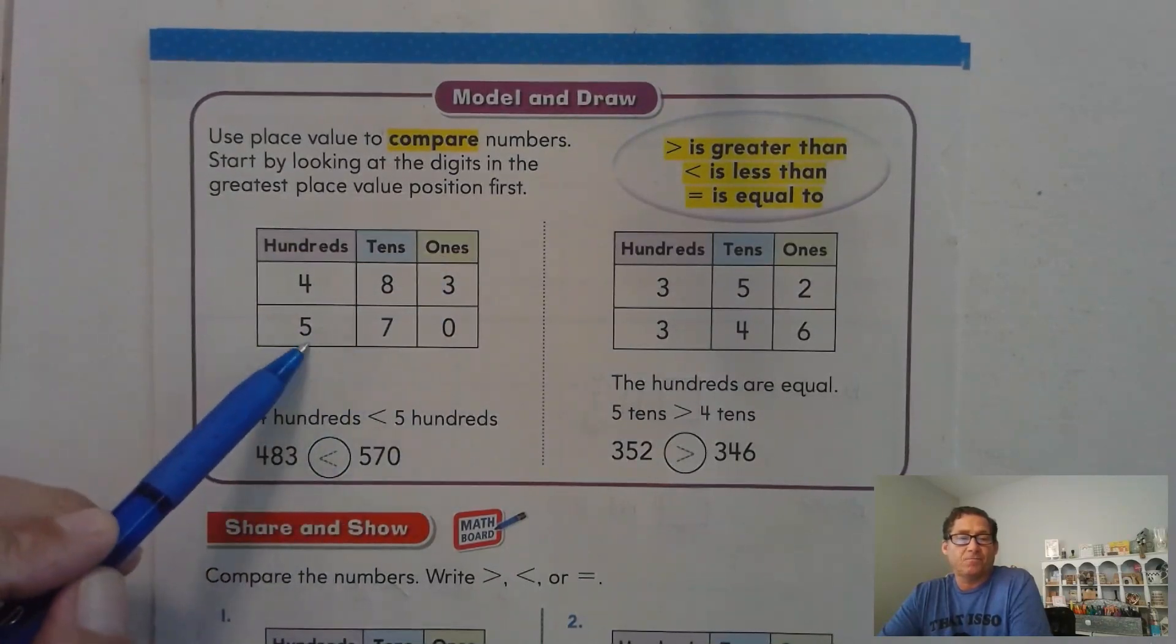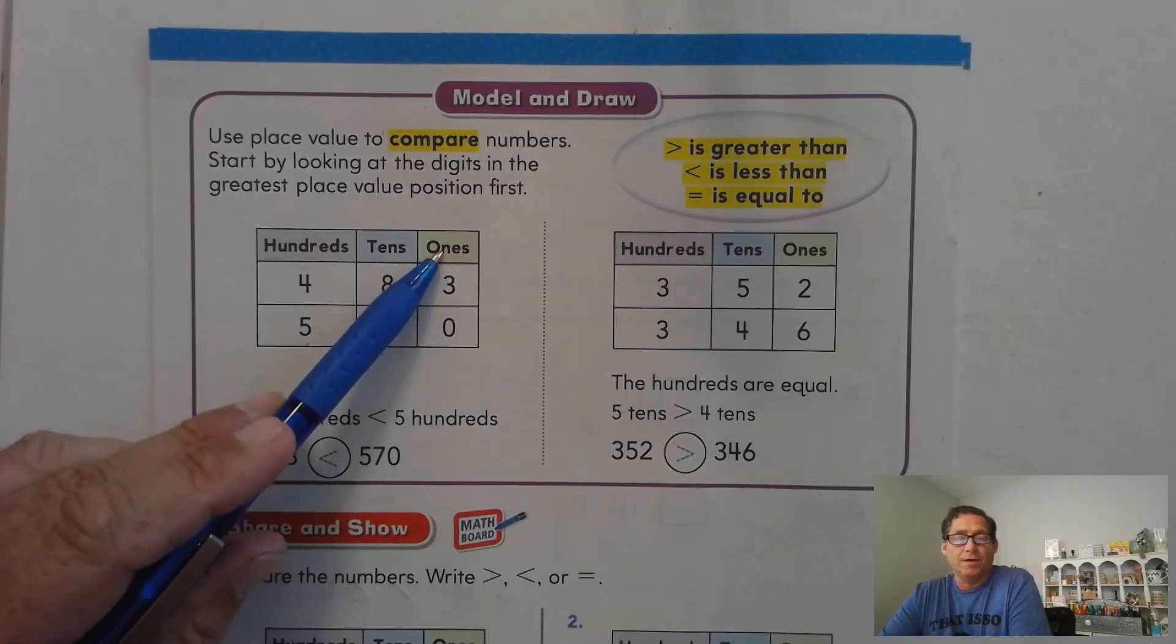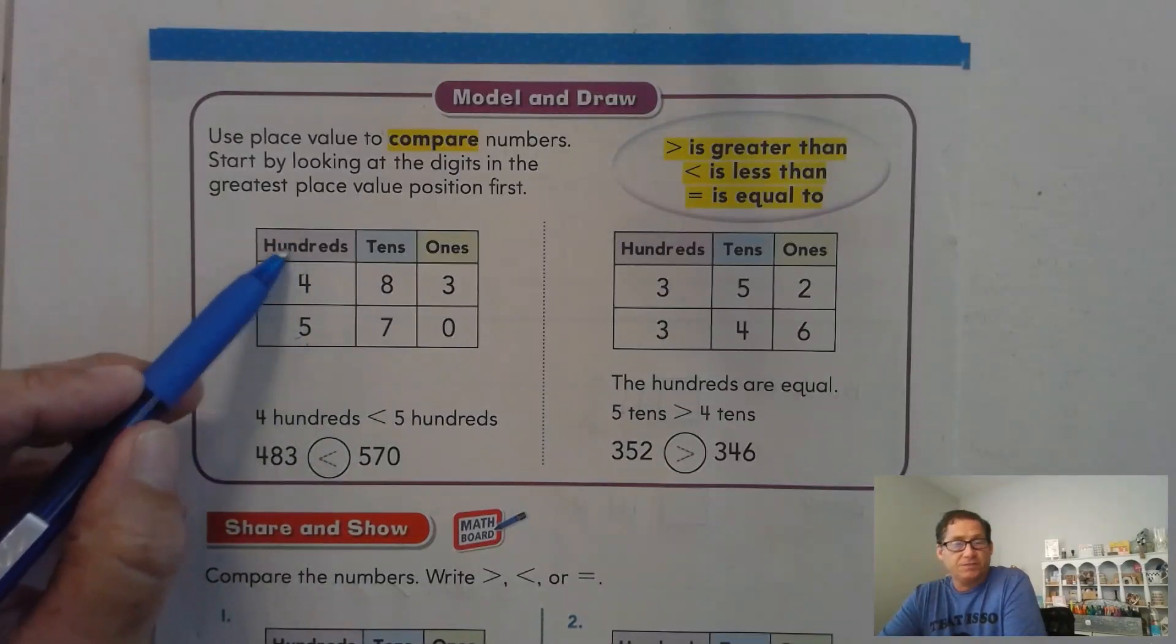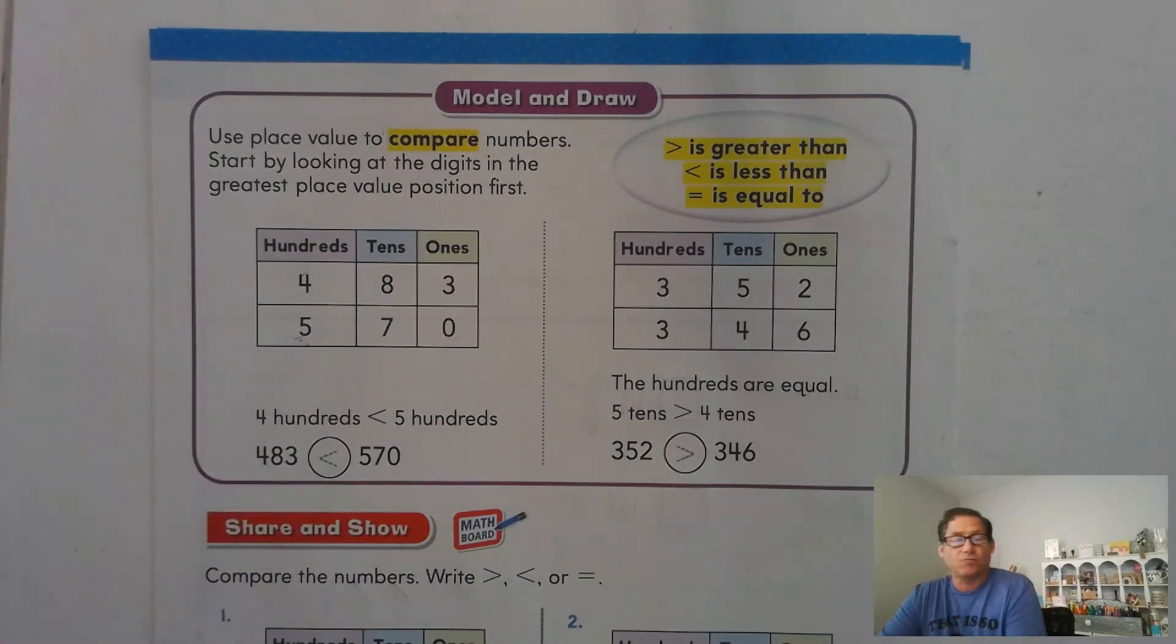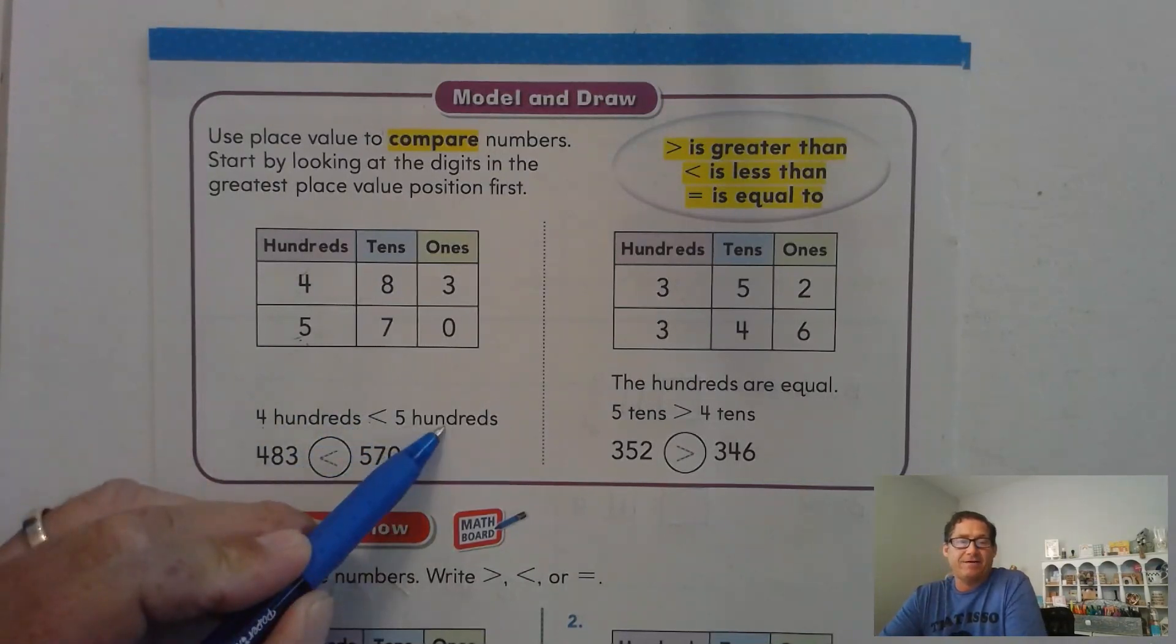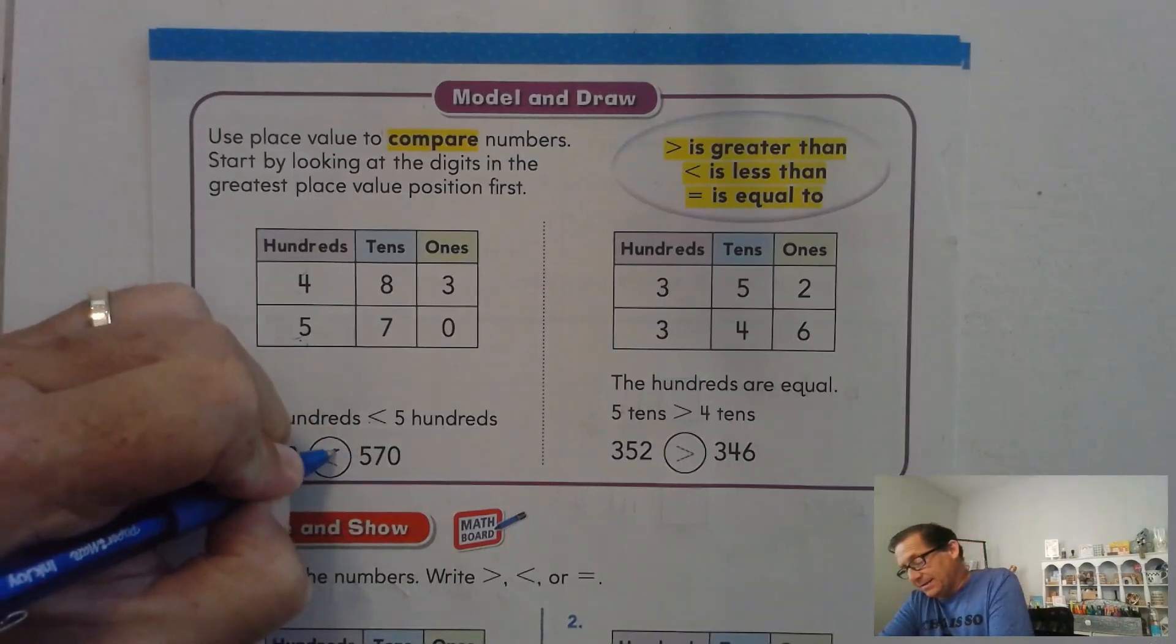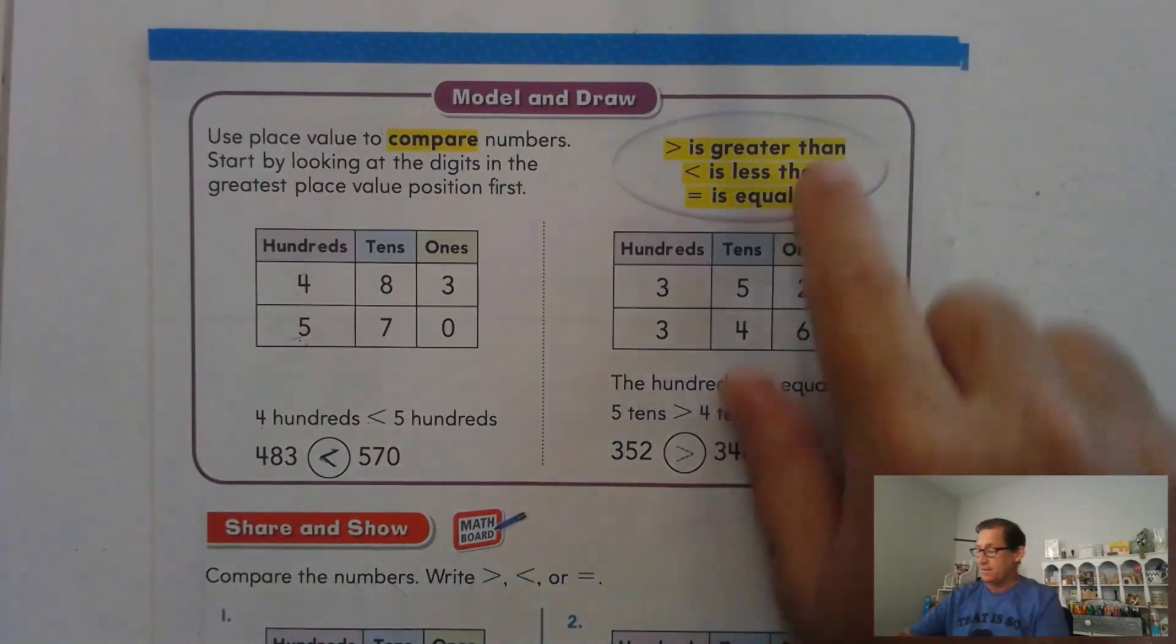And we know that we can write it using a place value chart as 4 hundreds, 8 tens, 3 ones. 570, we know that there's 5 hundreds, 7 tens, and 0 ones. Well, if we just start at the greatest place value position, which is the hundreds, we notice that 5 is greater than 4. Or we could say 4 hundreds is less than 5 hundreds. So if that's true, then 483 has to be less than 570.